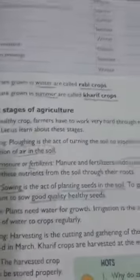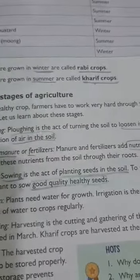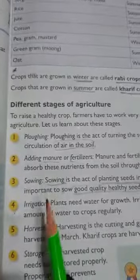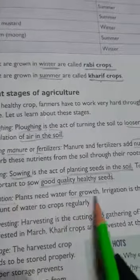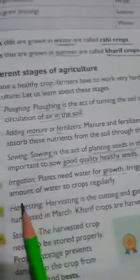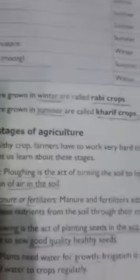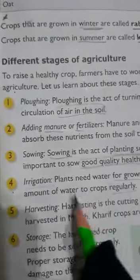The fourth stage is irrigation. Plants need water for growth. Irrigation is the act of supplying a sufficient amount of water to crops regularly. As you can see in the picture, they are supplying the sufficient amount of water to the crops daily.